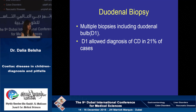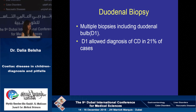Regarding duodenal biopsy, it is important to take multiple biopsies. What we recommend in our hospital is two biopsies from the duodenal bulb and four biopsies from D2 and D3. We published recently on our diagnosis of celiac disease and found that 21 of our cases showed histological findings only in the duodenal bulb. So it is really important to include the duodenal bulb when performing biopsies.